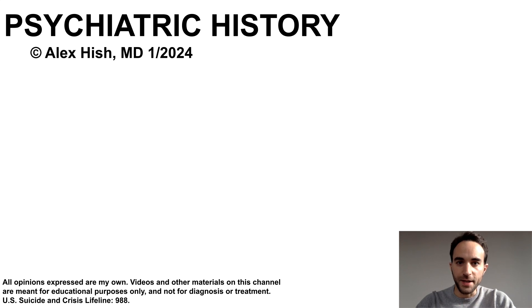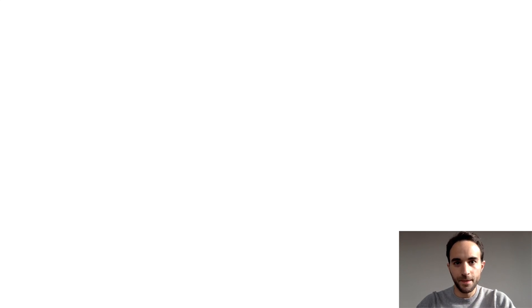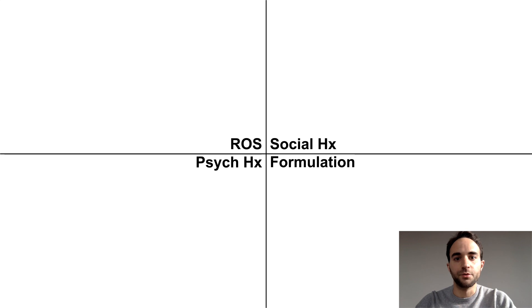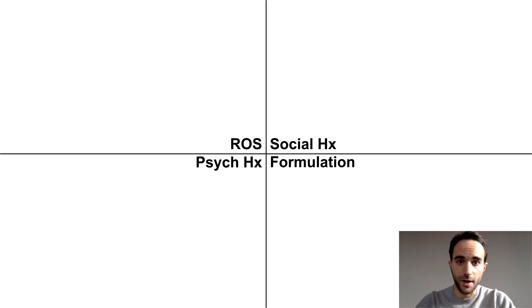This talk is about how to complete an initial psychiatric history interview. I'll teach you how to complete the interview using a simple visual organizer. The four major components of the interview are the psychiatric review of symptoms represented here in the top left, psychiatric history in the bottom left, social history in the top right, and formulation in the bottom right. Note that this does not include the history of present illness, which should be included prior to this part of the interview.